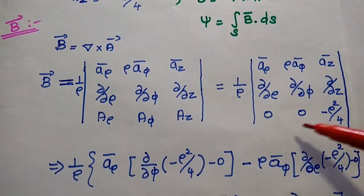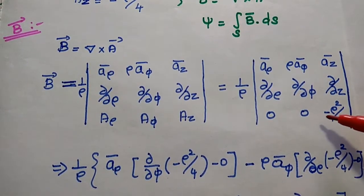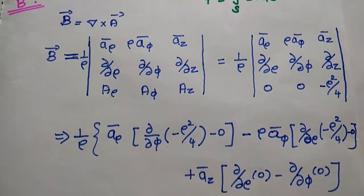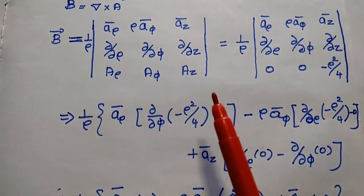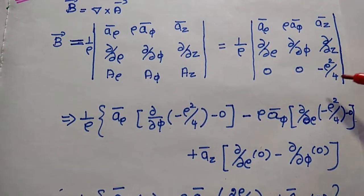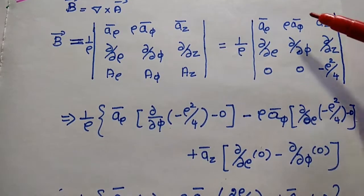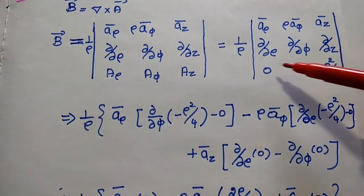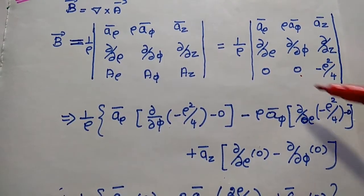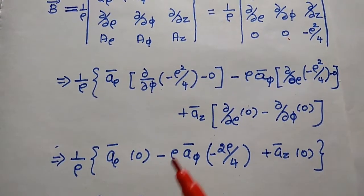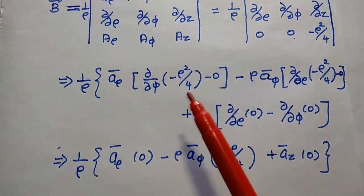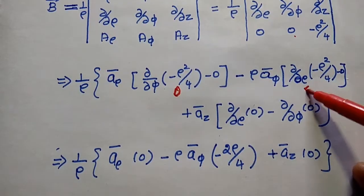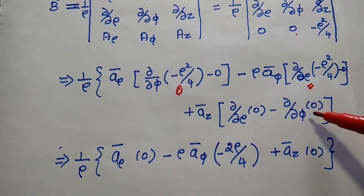Substituting the values: a_ρ and a_φ are 0, and az equals minus ρ² by 4. Solving this matrix operation, we get 1/ρ times âρ of ∂/∂φ of (minus ρ² by 4) minus 0, then minus ρ âφ times ∂/∂ρ of (minus ρ² by 4) minus 0, plus âz of ∂/∂ρ of 0 minus ∂/∂φ of 0. Differentiating with respect to φ — there is no φ term — so that term becomes 0. Differentiating with respect to ρ gives minus 2ρ by 4.